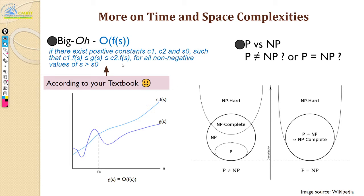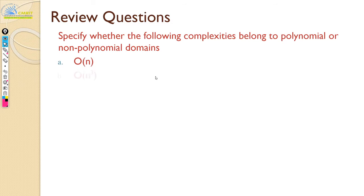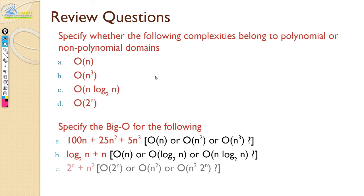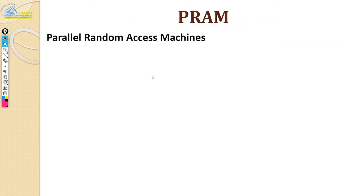We also have to refresh our basic asymptotic notations. We briefly saw about all these notations in the last class. So, PRAMs — what are the different hypothetical models that are available?